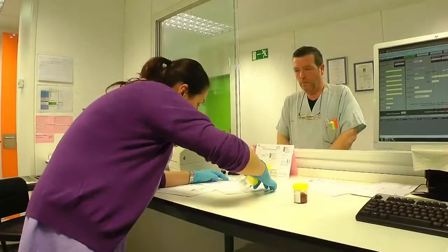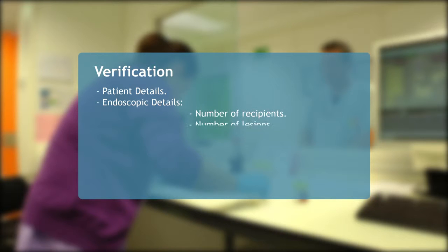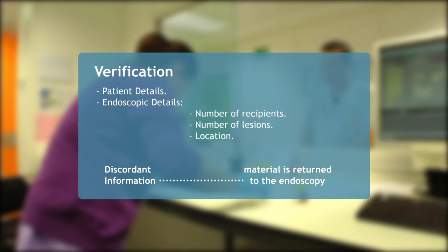The information in the endoscopic referral is checked: patient details, endoscopic details, number of samples submitted, number of lesions and their location. All samples should be perfectly identified with a sticker with the patient's details. If the details on the referral do not match the submitted elements — if there's one extra sample or one is missing, the patient's name is wrong, or the sample does not have a sticker — the samples are not accepted and are returned for correction.